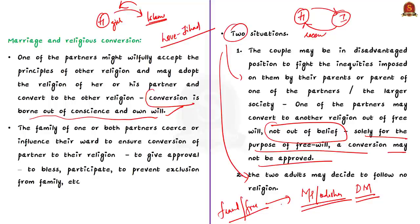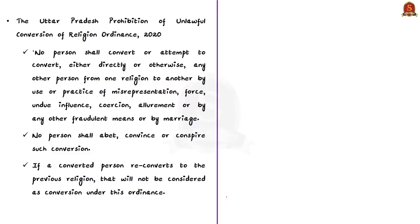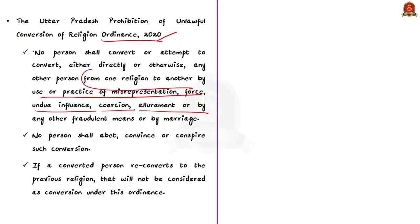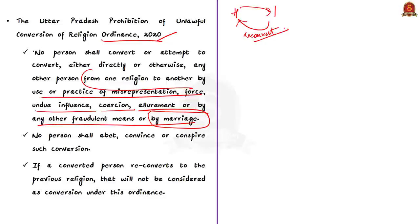The UP government promulgated the Uttar Pradesh Prohibition of Unlawful Conversion of Religion Ordinance. As per this ordinance, no person shall convert or attempt to convert any other person from one religion to another by use of misrepresentation, force, undue influence, coercion, fraudulent means, or by marriage. If a converted person reconverts to their previous religion, that will not be considered a conversion under this ordinance. According to this law, even conversion for the sole purpose of marriage is not acceptable — it may be out of free will, but not by faith.